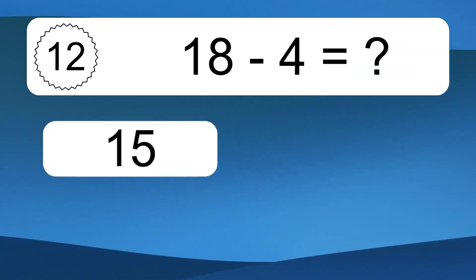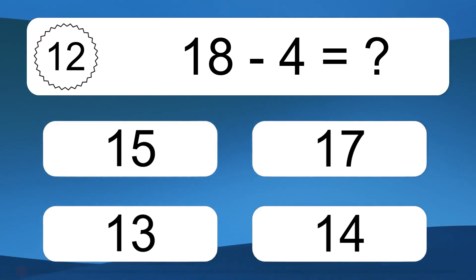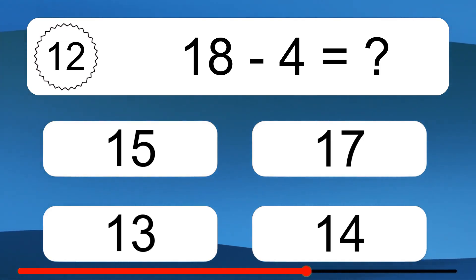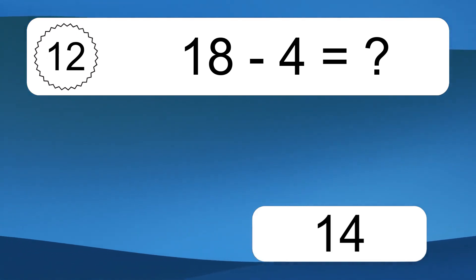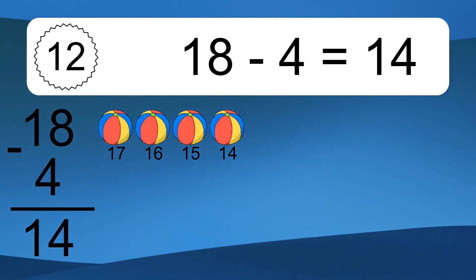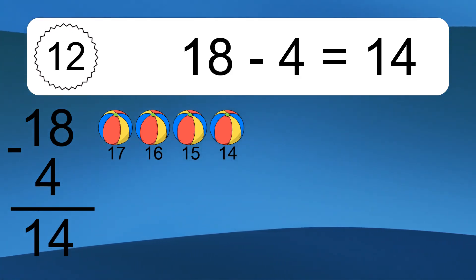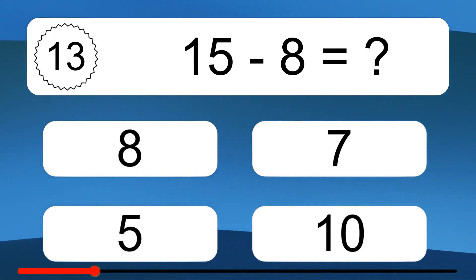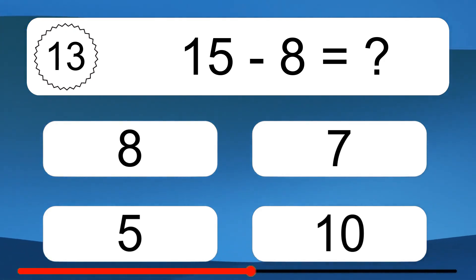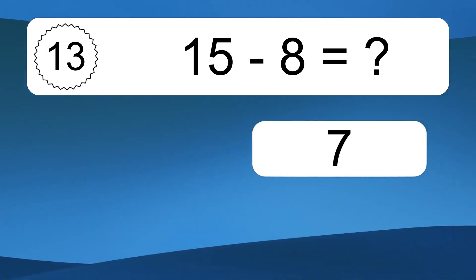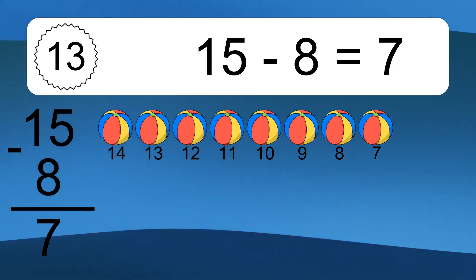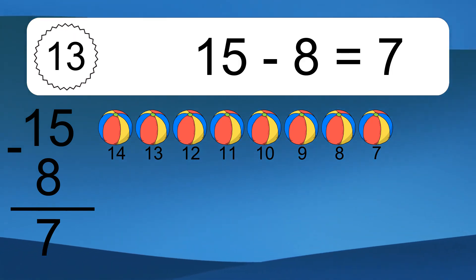18 minus 4 equals what? 18 minus 4 equals 14. Let's count it: 17, 16, 15, 14. 15 minus 8 equals what? 15 minus 8 equals 7. Let's count it: 14, 13, 12, 11, 10, 9, 8, 7.